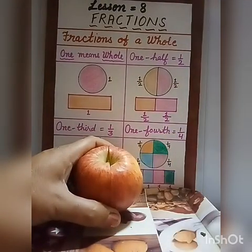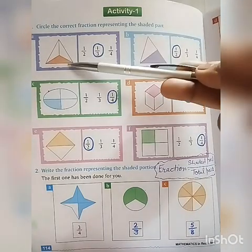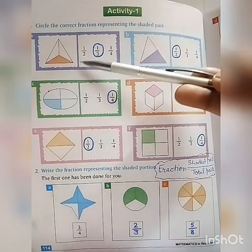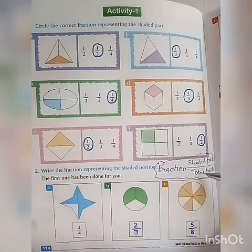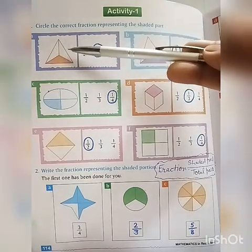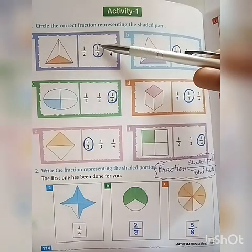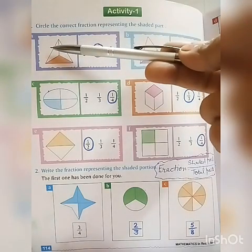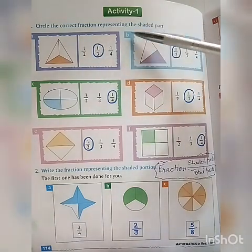Now we will start Activity One. Figures and fractions are given and we have to circle the correct fraction. We write the fraction in the form of shaded parts upon total parts. Now see part A - how many parts are shaded? Only one part is shaded, so we write one. How many total parts are in this figure? One, two, and three - so one upon three is the correct option.